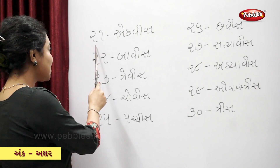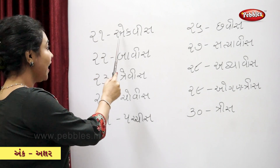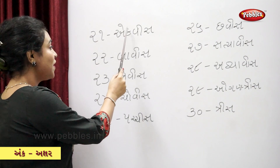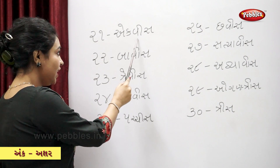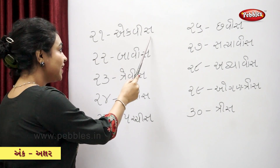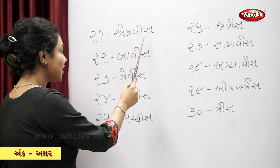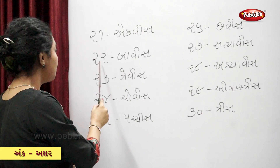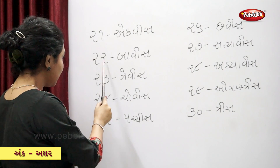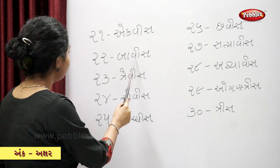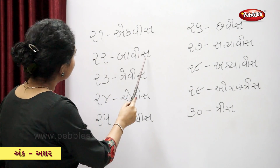Ekvies — twenty-one. Bavies — twenty-two.